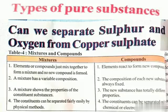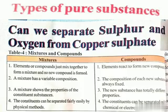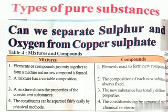A mixture has a variable composition. But in compounds, the composition of each new substance is always fixed — atoms of different elements combine together in a fixed ratio to form compounds. The constituents in mixtures can be separated easily by physical methods. The constituents in compounds can be separated only by chemical or electrochemical reactions.